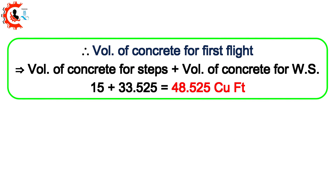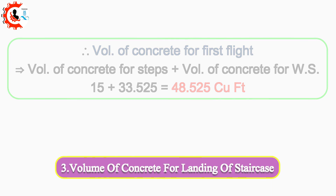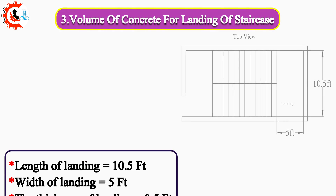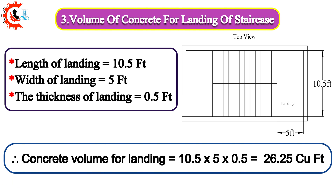The volume of concrete for the first flight = volume of concrete for steps + volume of concrete for waste slab = 15 + 33.525 = 48.525 cubic feet. 3. Volume of concrete for landing of staircase. Length of landing = 10.5 feet, width of landing = 5 feet, thickness of landing = 0.5 feet. Concrete volume for landing = 10.5 × 5 × 0.5 = 26.25 cubic feet.